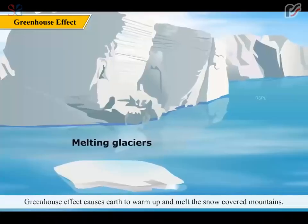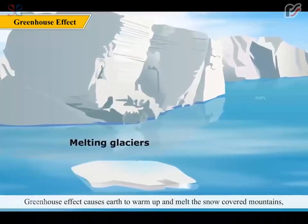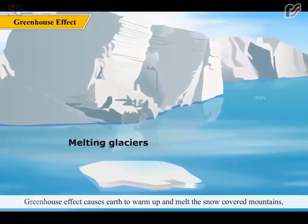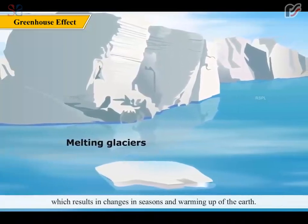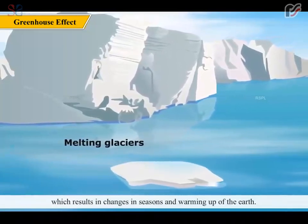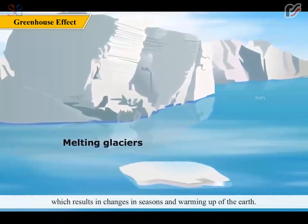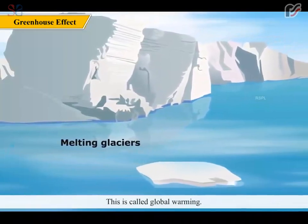The greenhouse effect causes the Earth to warm up and melt snow-covered mountains, resulting in changes in seasons and the overall warming of the Earth. This is called global warming.